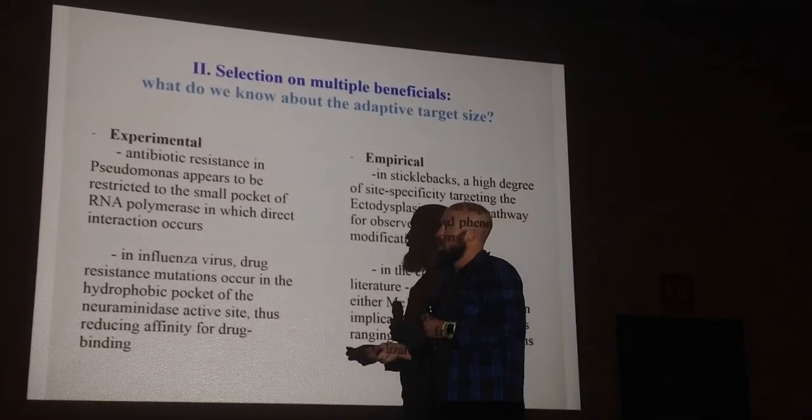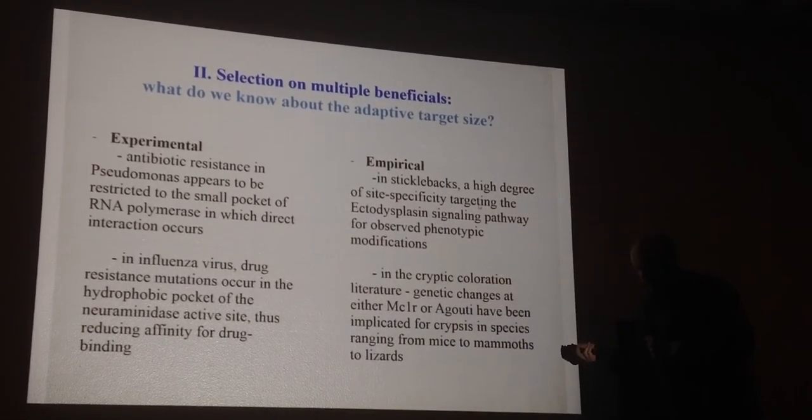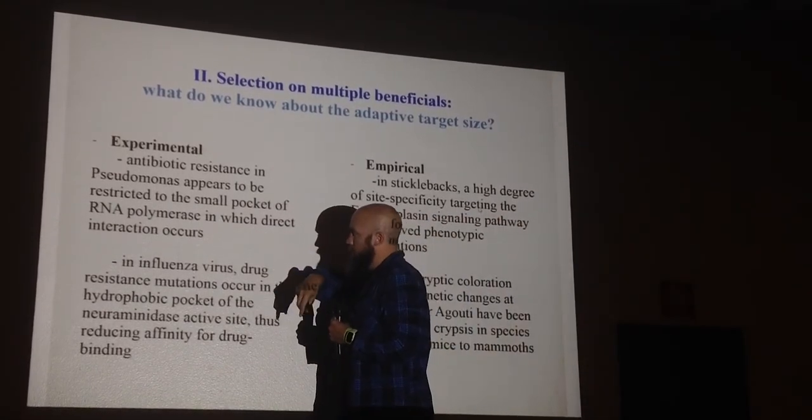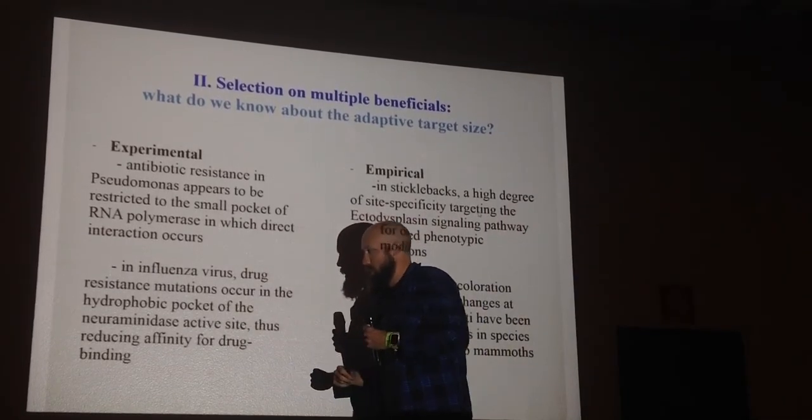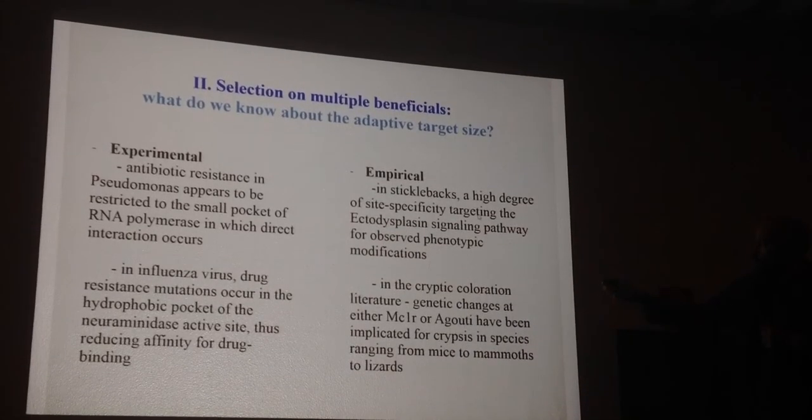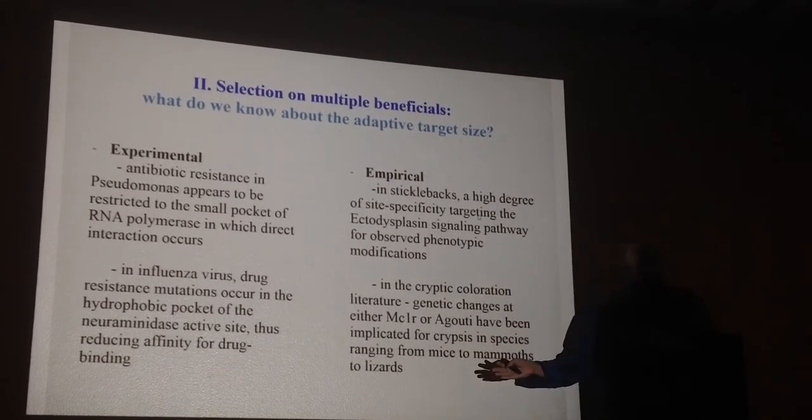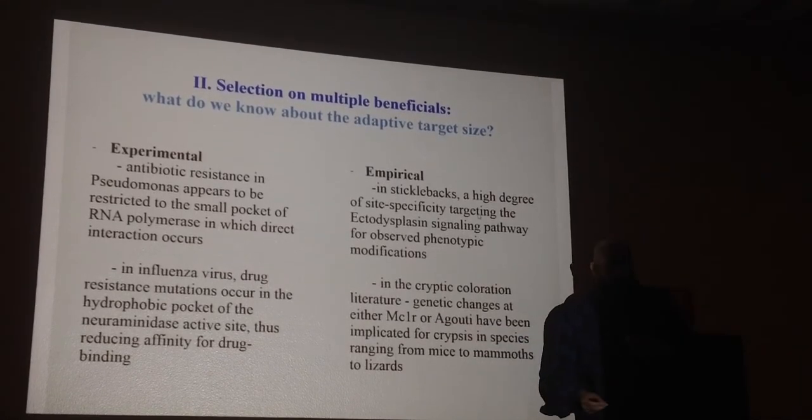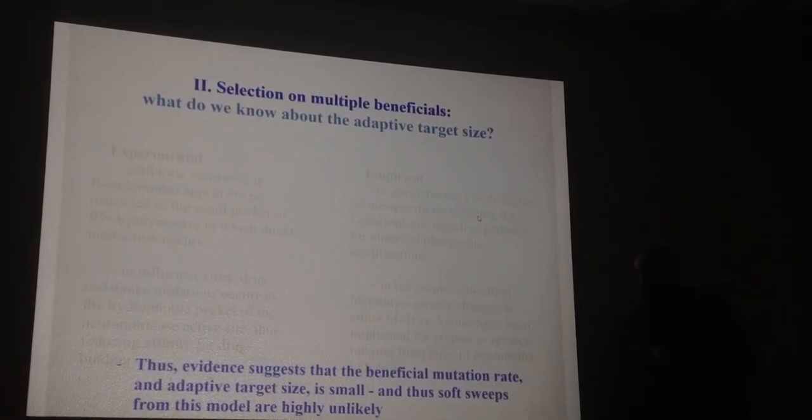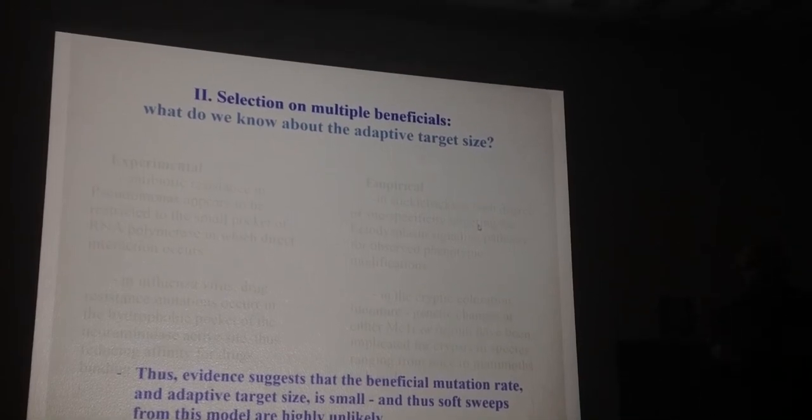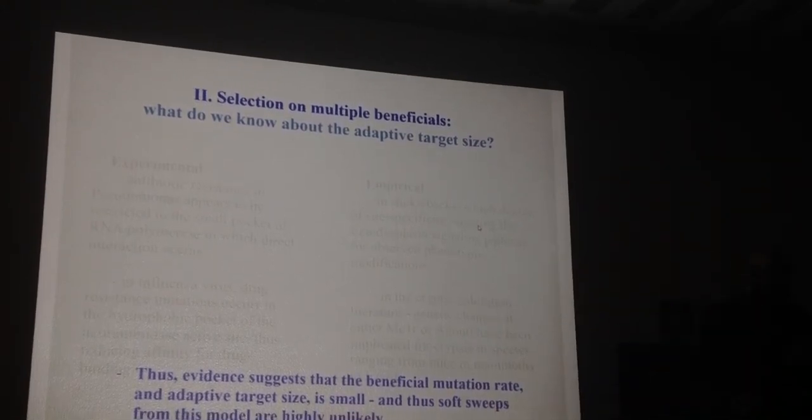A few notes on what we know about adaptive target size, that is how many mutational hits can give you the same phenotype. Again, two experimental and two empirical results. Returning to antibiotic resistance in Pseudomonas, we know a lot about how this phenotype is made, and it's actually hits in this small pocket of the RNA polymerase. In influenza virus, we also know a lot about Oseltamivir drug resistance, where you have to hit this pocket for neuraminidase activity. In sticklebacks, we know a lot about the Eda locus pathway. Again in cryptic coloration, pretty much whether you're talking about mice or lizards or mammoths or people, you're always getting MC1R or Agouti. My point here really is the evidence suggests that the beneficial mutation rate and the adaptive target size is relatively small. That is, the number of hits you can have to give you the exact same selection coefficient is probably a small number, and thus soft sweeps from this model are also quite unlikely in my opinion.